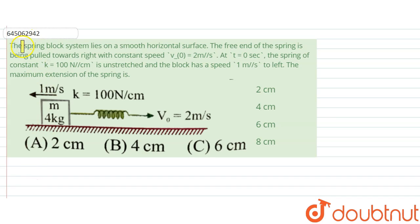Hello, we are giving you the question and the question says the spring block system lies on a smooth horizontal surface. The free end of the spring is being pulled towards right with constant speed 2 meter per second. At t equals 0 second, the spring of constant k is 100 newton per centimeter is unstretched and the block has a speed 1 meter per second to the left. The maximum extension of the spring is what?